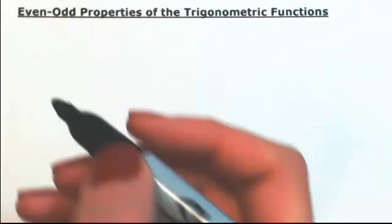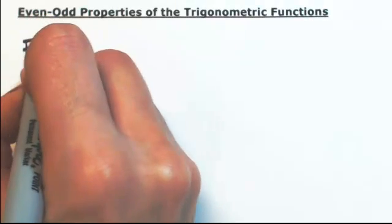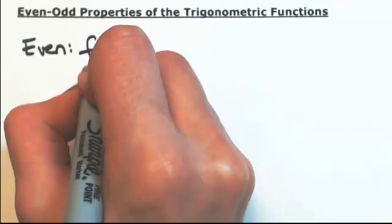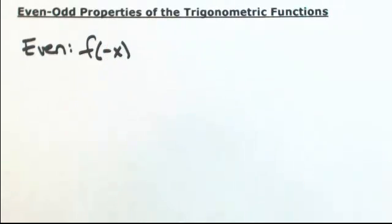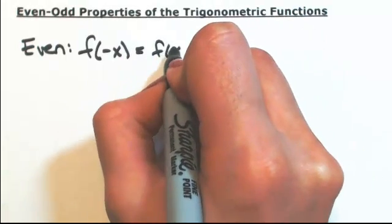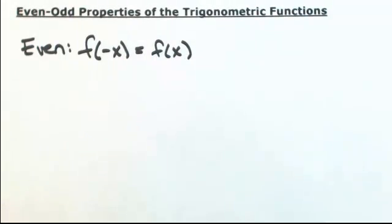Even and odd properties of functions. If you have an even function and you drop in a negative input, negative x, the even function will eat the negative and give you back what you started with: f(x).